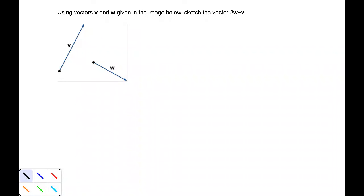Using vectors v and w given in the image below, sketch the vector 2w minus v. We have two vectors given to us.